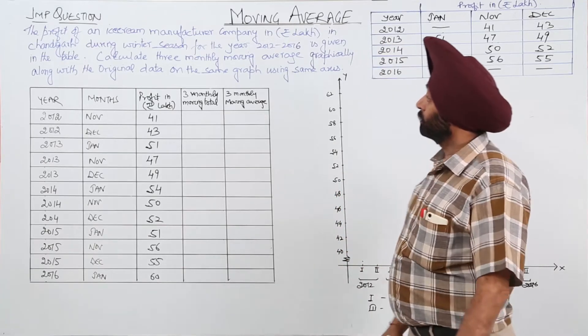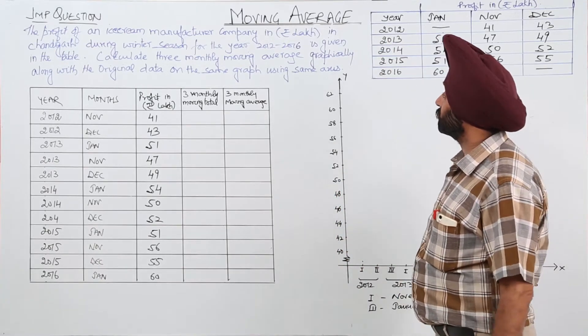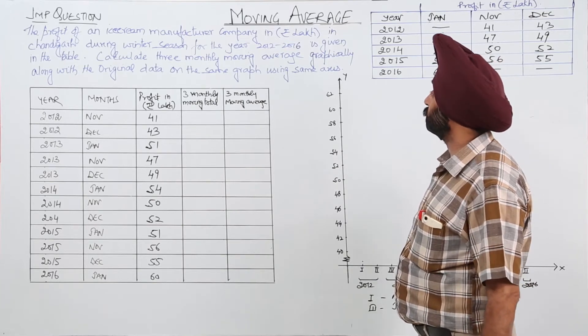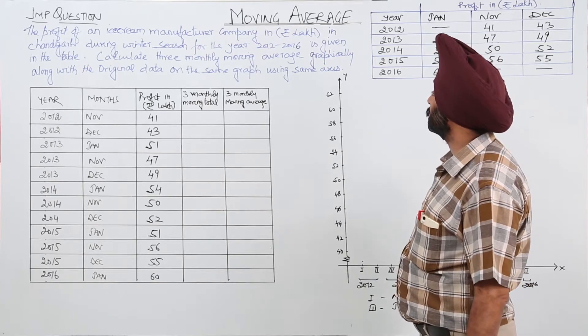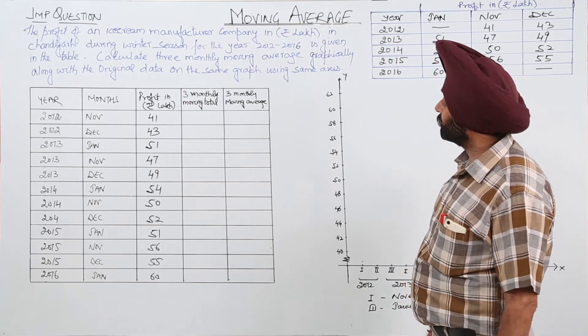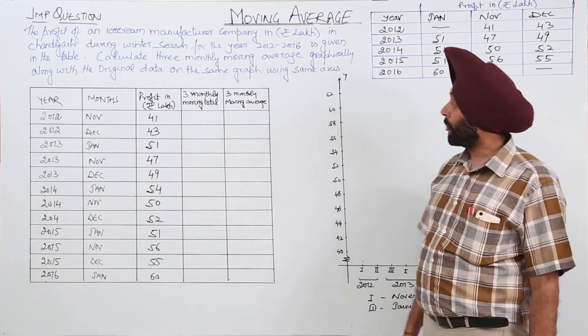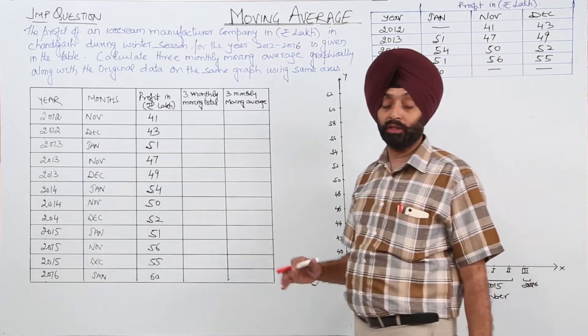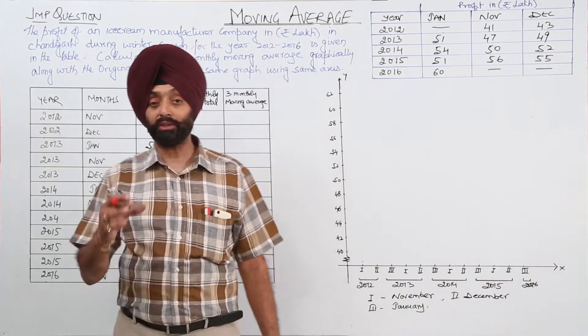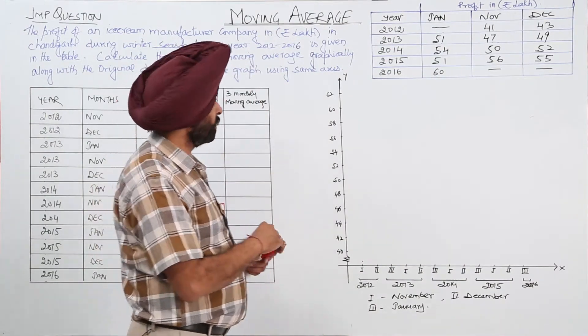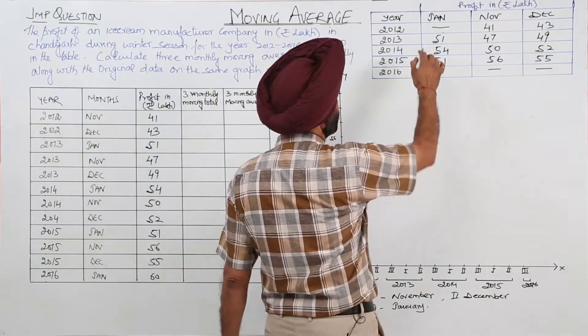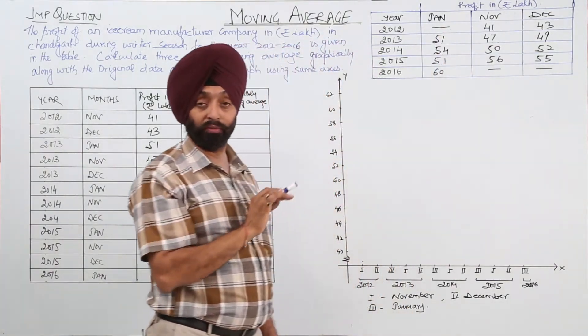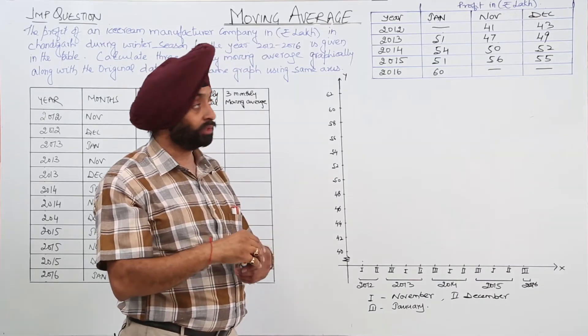A very nice question. The profit of an ice cream manufacturing company in rupees lakh in Chandigarh during winter season for the year 2012-16 is given in the table. We have to calculate 3 monthly moving average graphically along with the original data on the same graph using the same axis. Now see what is the difference in a normal question and this question. In this question, right in the beginning in the month of January we are having no data for 2012. So be careful when we are solving this type of question.